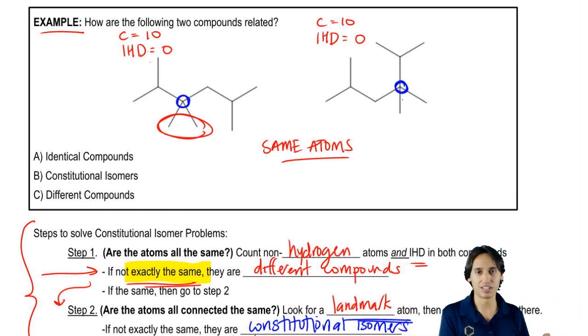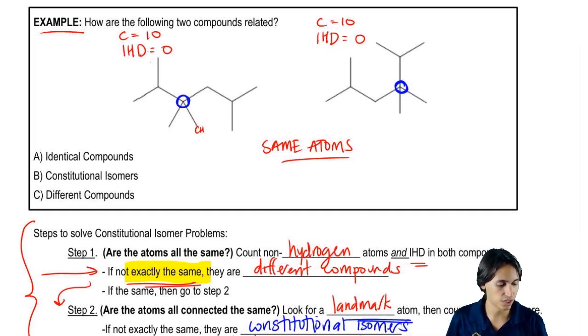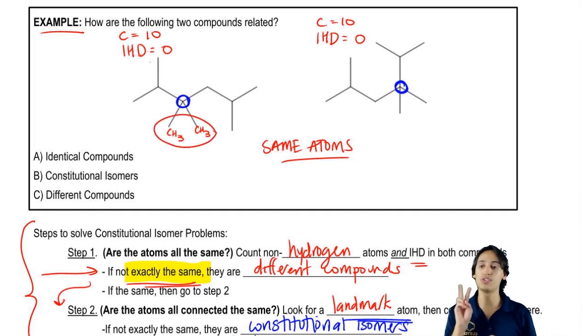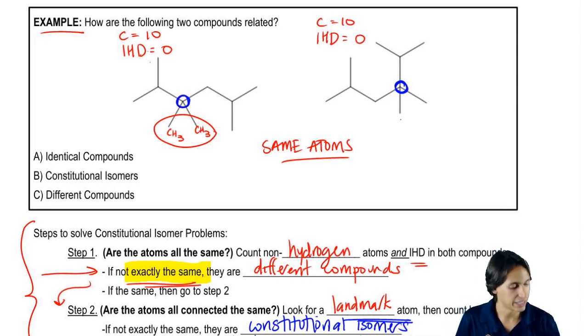But we'll talk about that more later. You don't need to know that that's called a methyl group. But for right now, you do need to know that that's a CH3. So I'm just going to make this a little bit bigger, CH3, CH3. So we have two CH3s coming off of that. Do we have the same thing coming off of the other one? Yes. CH3, CH3. Cool.